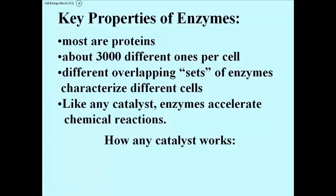There are about 3,000 different enzymes per cell. That means that cells will have overlapping sets of enzymes — one cell won't have 3,000 enzymes and another cell have 3,000 totally different ones. They're simply overlapping sets of enzymes, and these characterize the different cells with their different functions.